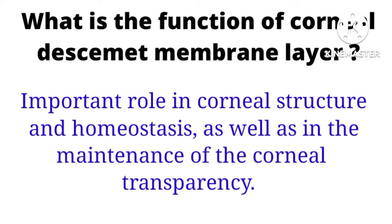What is the function of the corneal Descemet's membrane layer? Descemet's membrane of the cornea plays an important role in the corneal structure and homeostasis, as well as in the maintenance of the corneal transparency.